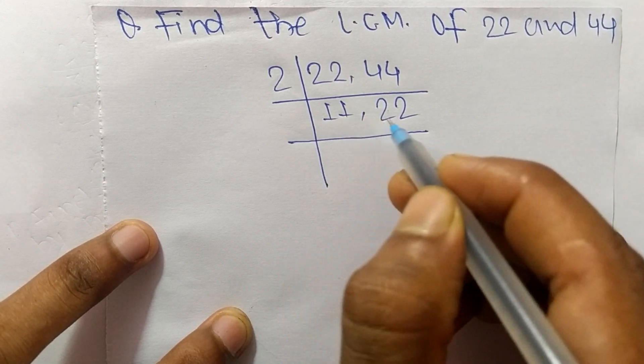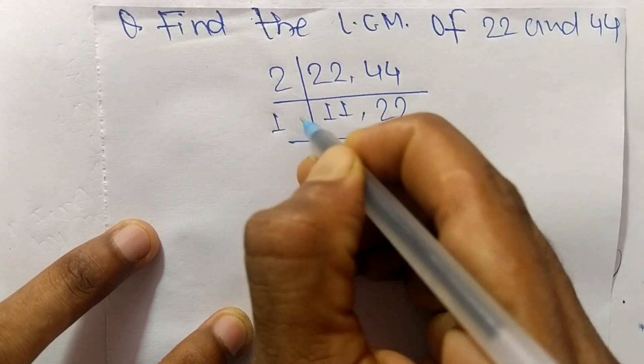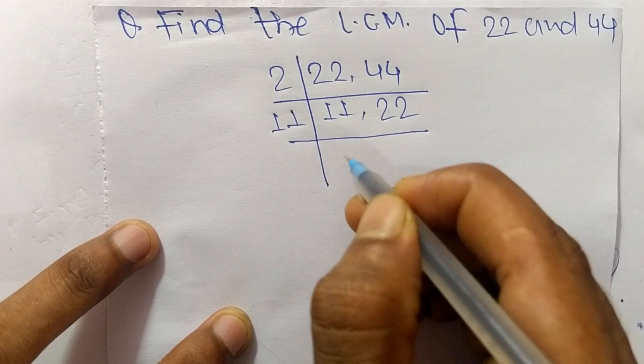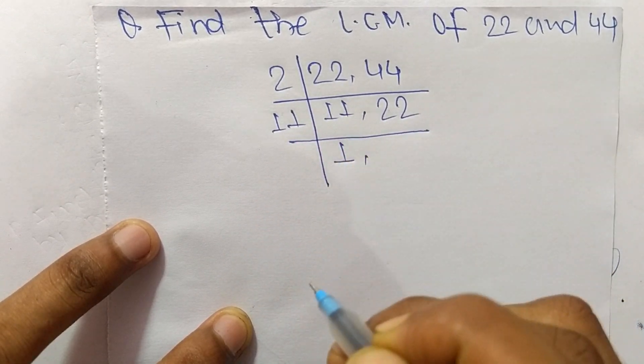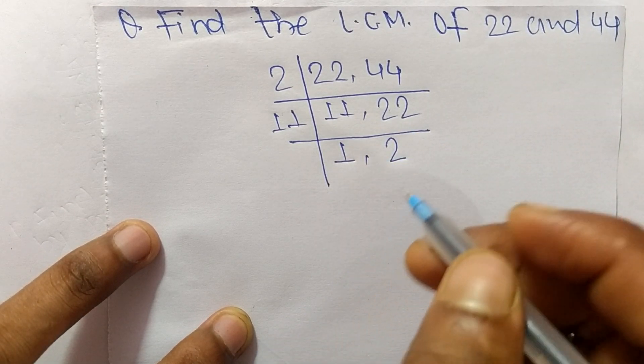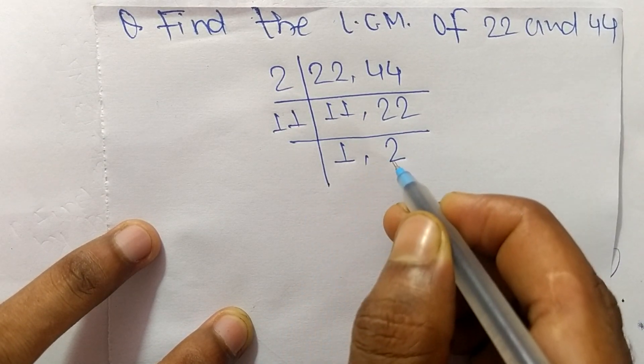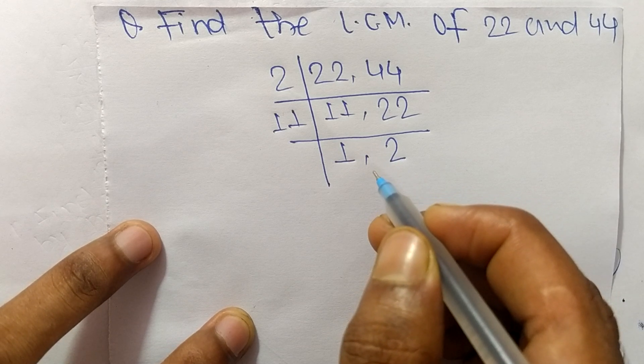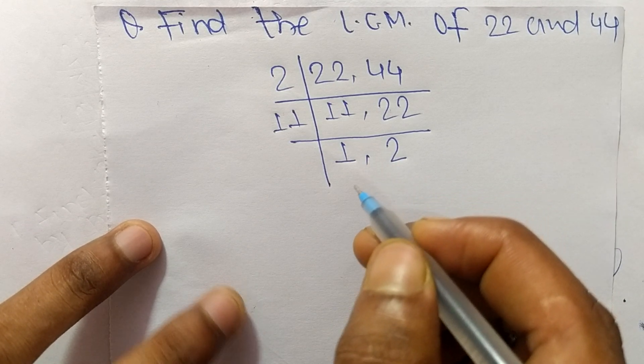11 times 1 equals 11 and 11 times 2 equals 22. At last we have 1 and 2 which are not exactly divisible by the same number.